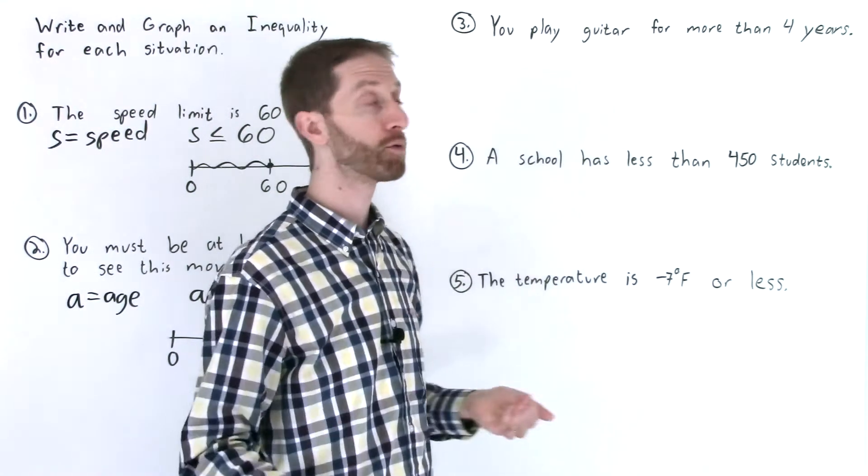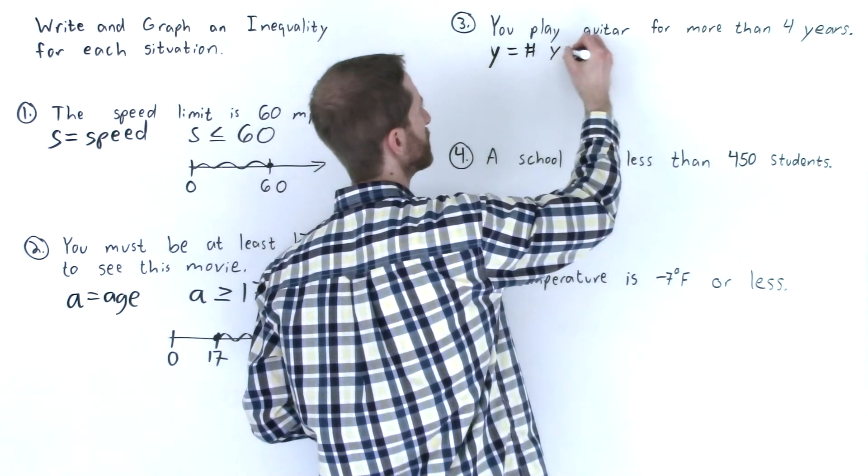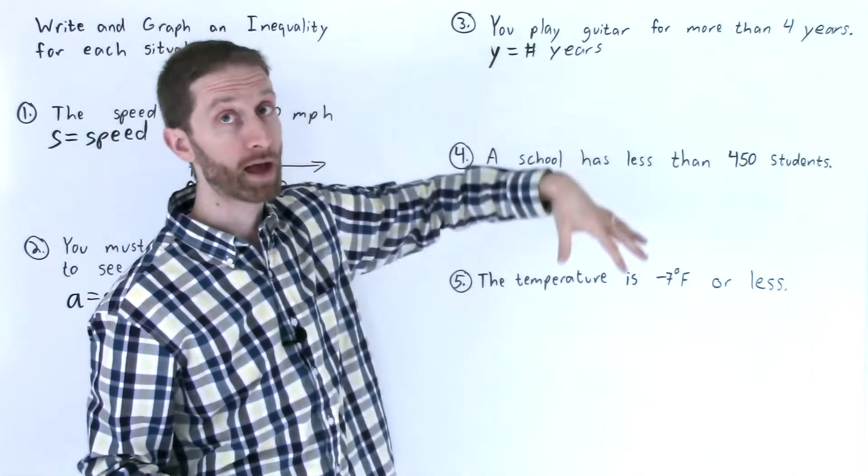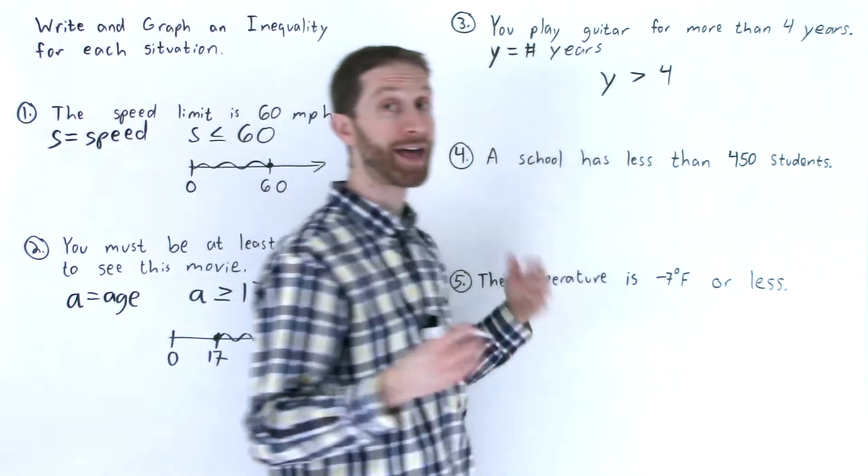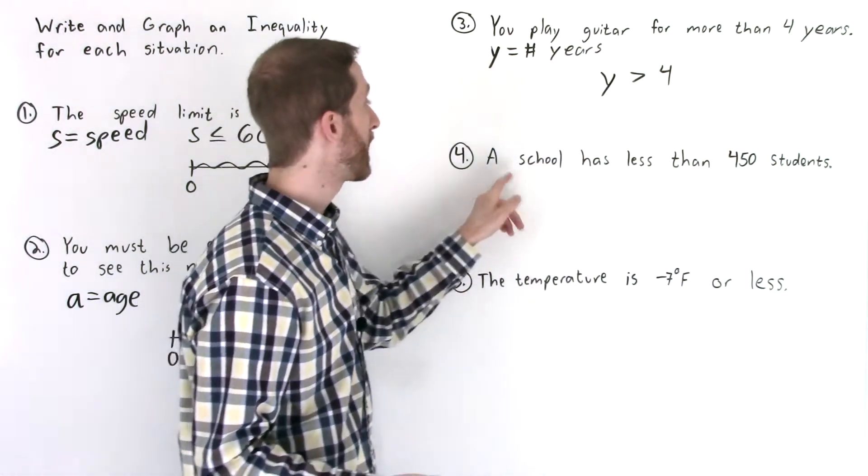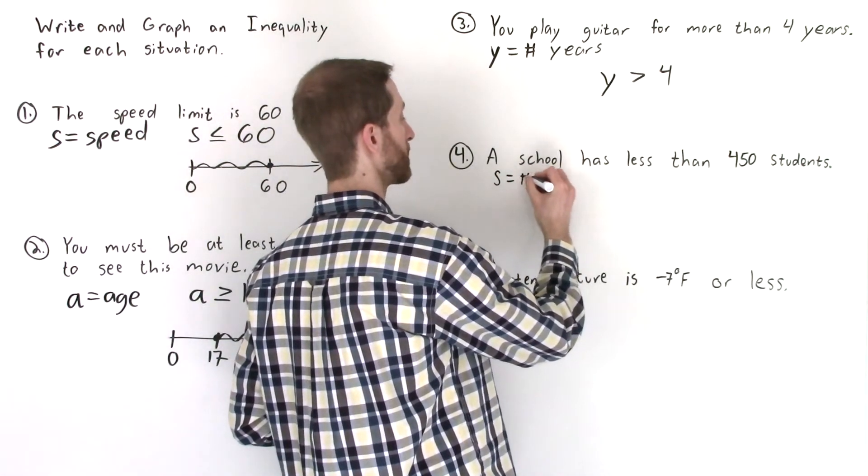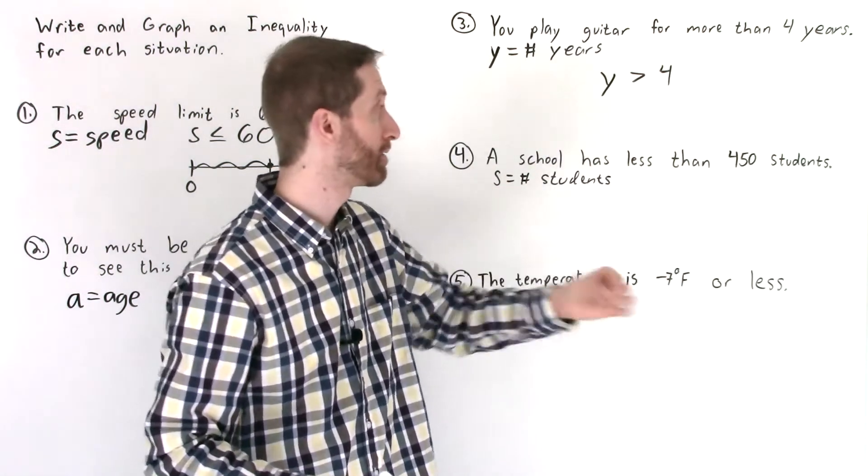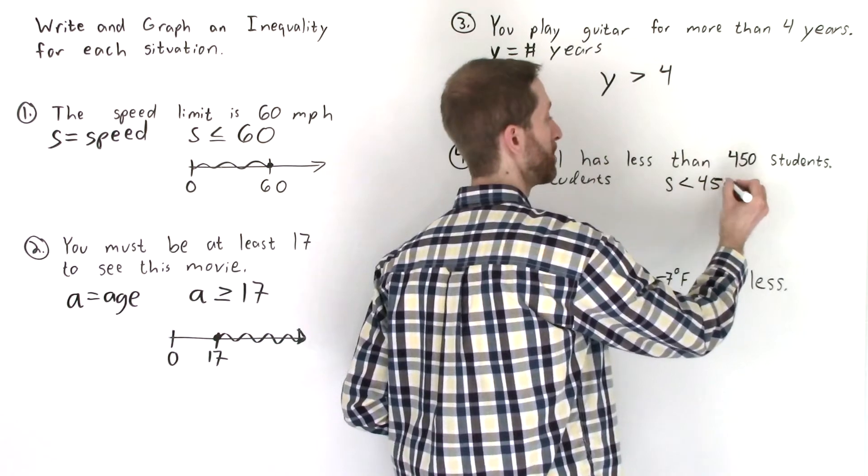You play guitar for more than four years. So let's say that Y is the number of years, Y equals the number of years you play guitar. Well you play for more than four years which means Y is more than, greater than four. So Y is greater than four. And that's it as far as the inequality goes. Again I'm going to do two maybe three at a time and then go back and graph them all. A school has less than 450 students. So S would be the number of students that we have. And then the number of students is less than 450.